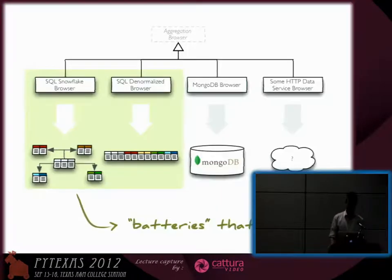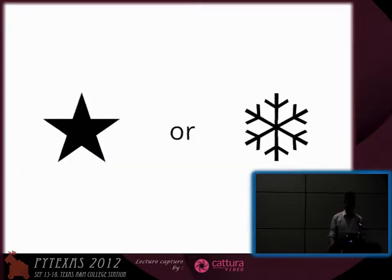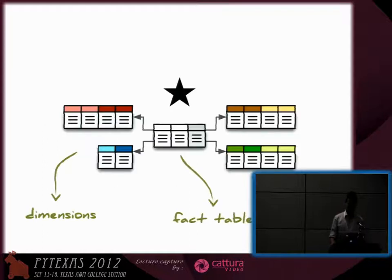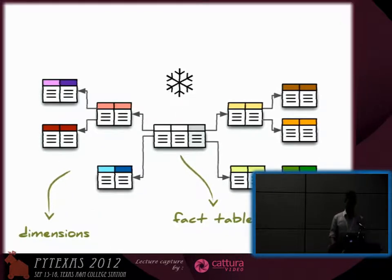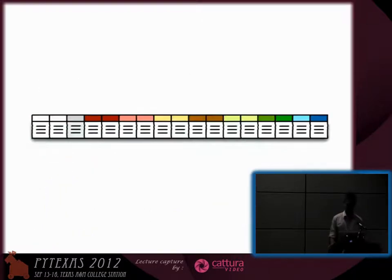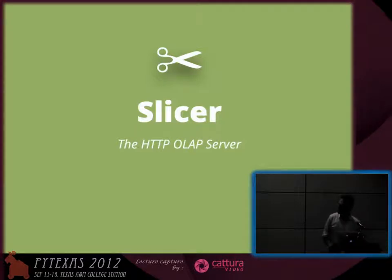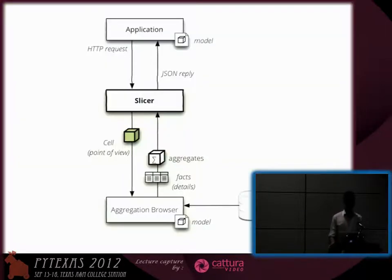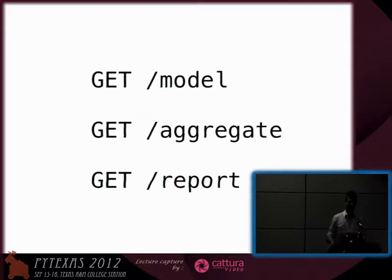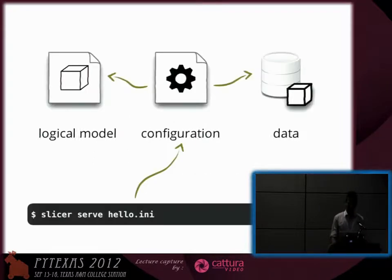There is a currently implemented browser which supports SQL databases. There was a MongoDB backend as well, but support for it was dropped. The data needs to be in either a star or snowflake schema. Star schema has a central fact table with surrounding dimension tables; snowflake schema is simply a more decorated star schema. It also works with denormalized tables — one big table. There is also an HTTP server called Slicer which exposes all OLAP functionality through HTTP using JSON queries.